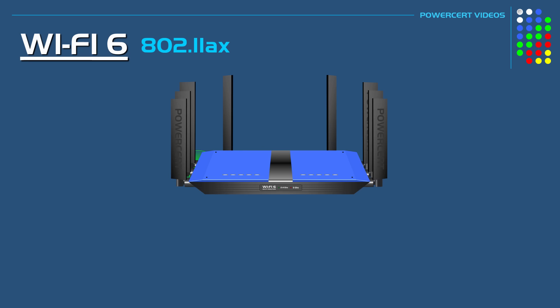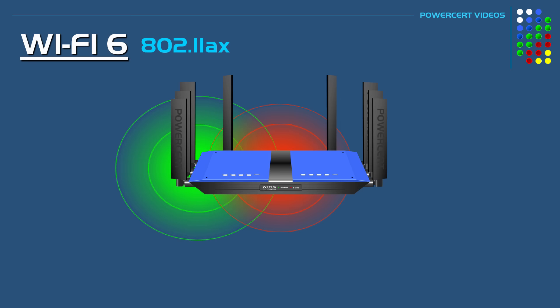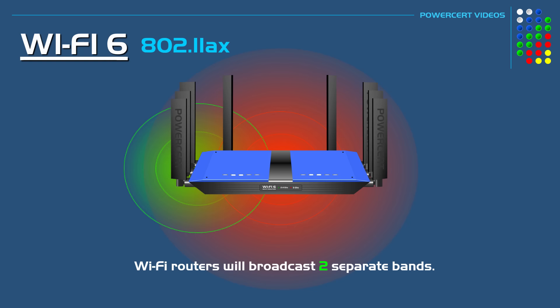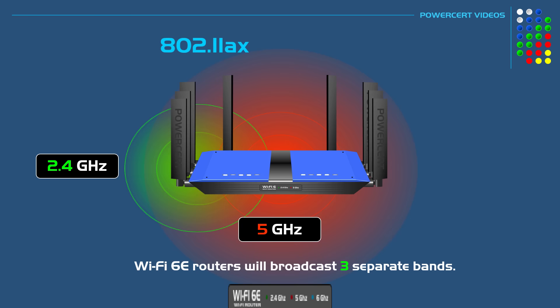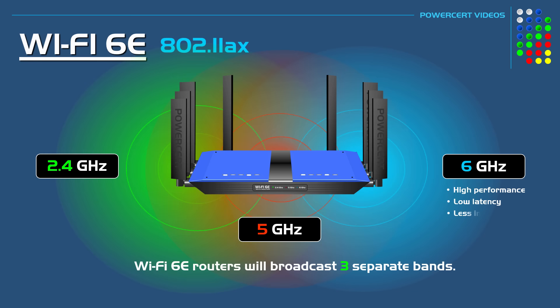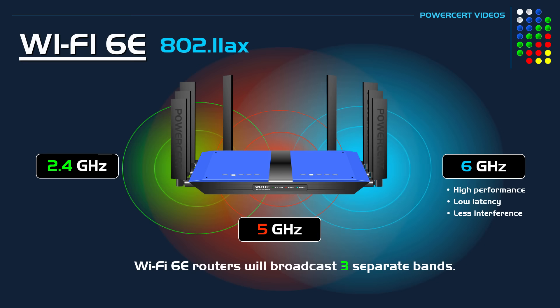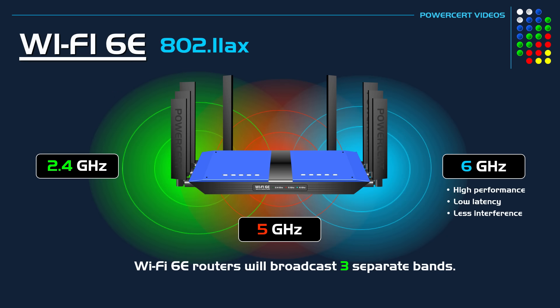Wi-Fi routers broadcast a wireless signal or frequency band for wireless devices to connect to. Up until now they have been restricted to broadcasting two frequency bands: 2.4 and 5 gigahertz. However, with the new Wi-Fi 6E, it will broadcast a third band, which is 6 gigahertz. The 6 gigahertz band opens up additional channels for delivering large amounts of data to Wi-Fi devices, especially in crowded environments, resulting in better network performance and a greater capacity to support more users.